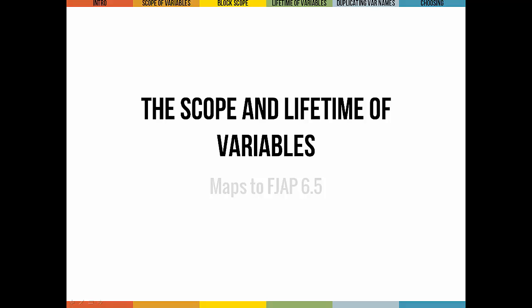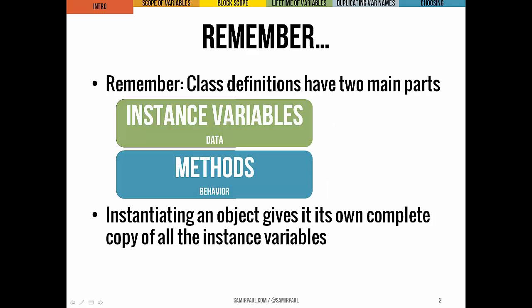We've encountered over and over again this basic idea about classes. Class definitions have two main parts: instance variables or data, and methods or behavior. Whenever we instantiate a new object, it gets its own fresh, complete copy of all the instance variables. And whenever we call a method, it responds by activating that corresponding method in its own class.